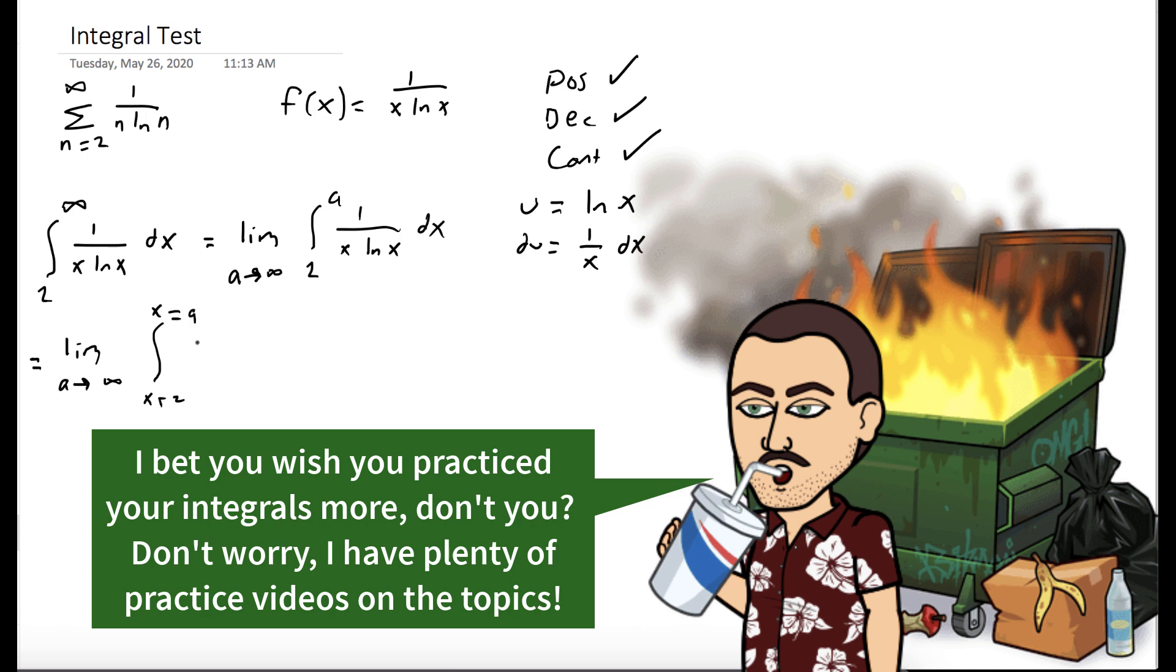So it's the limit as a goes to infinity. We're going to keep our bounds in terms of x just to keep it clean, which works out to be the limit as a goes to infinity of the natural log of the absolute value of u, evaluated at x equals 2 and x equals a.